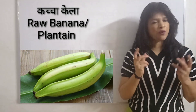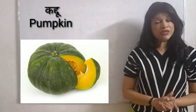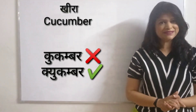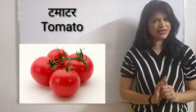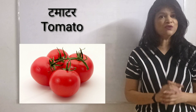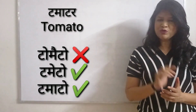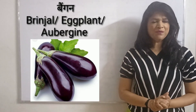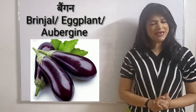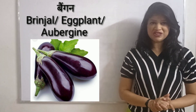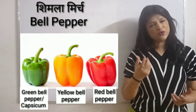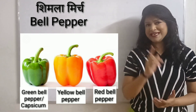It is called raw banana or plantain. It is called pumpkin. It is called cucumber. It is called green chili. It is called tomato. It is called lotus stem or lotus root. It is called brinjal, also known as eggplant or aubergine. We call it bell pepper — yellow or red — and it is also called capsicum.